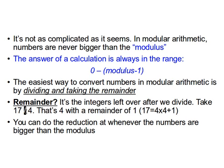If the input number n is less than the modulus, then the remainder is n itself. For example, 6 mod 9: since 6 is less than 9, the remainder is simply 6.